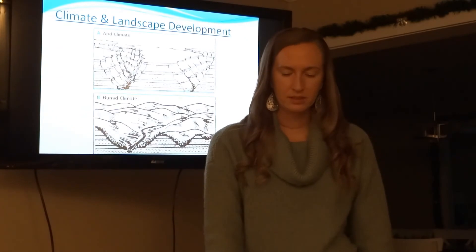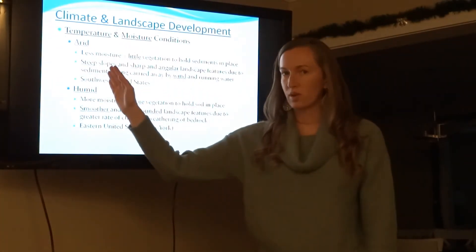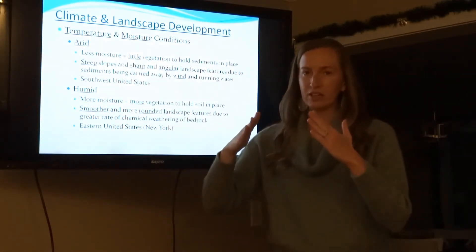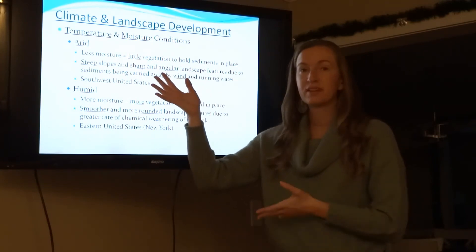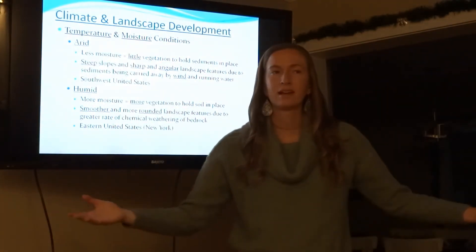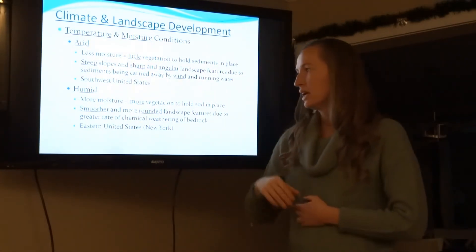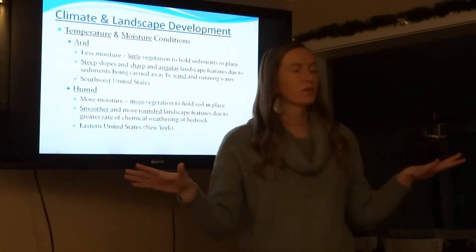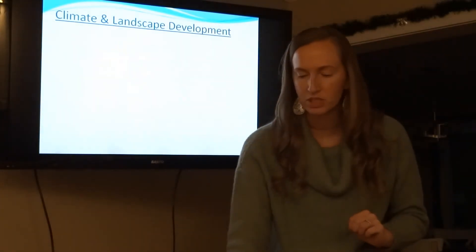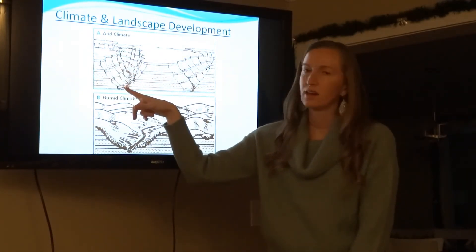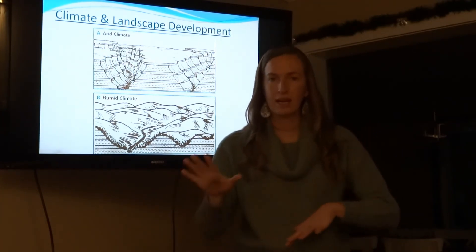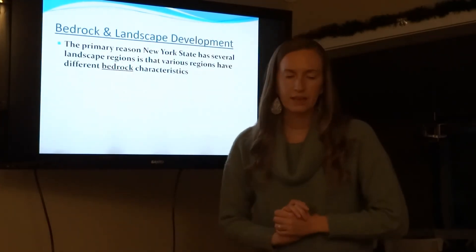Climate affects landscape development. An arid climate is dry, and a humid climate is very wet with lots of rain. A dry climate produces very steep, sharp slopes with little vegetation — like the southwest United States, Arizona, and the Grand Canyon area. A humid climate like New York has lots of vegetation — trees — and the mountains are more rounded and less sharp and jagged because rain has smoothed everything out.